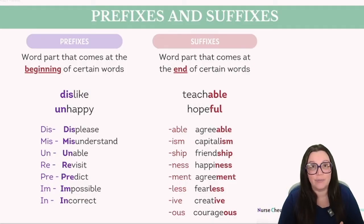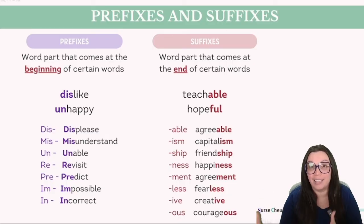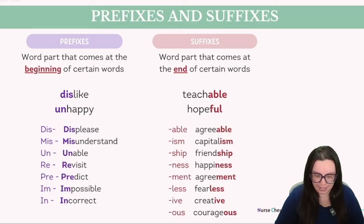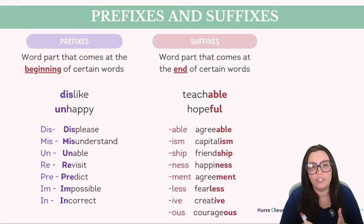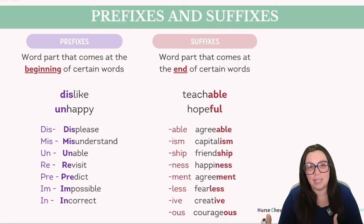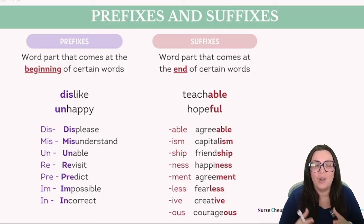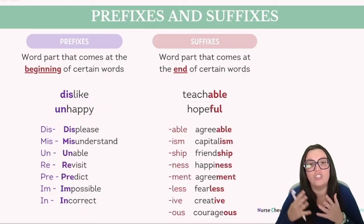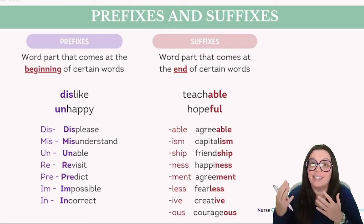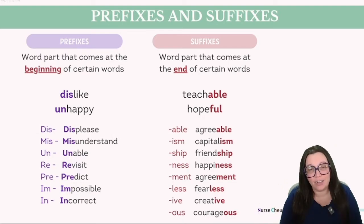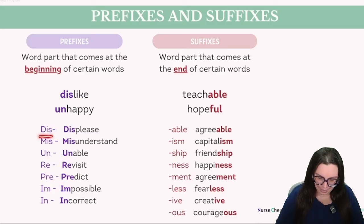Prefixes and suffixes significantly alter the meaning of the words they are affixed to. Take the word like, which conveys a positive sentiment. By adding the prefix dis- to that word, it transforms into dislike — a reversal of the original sentiment. Similarly, adding the prefix un- to happy changes it to unhappy, representing a distinctly different state. Among the most common prefixes you will see on the TEAS are: dis-, mis-, un-, re-, pre-, im-, and in-.